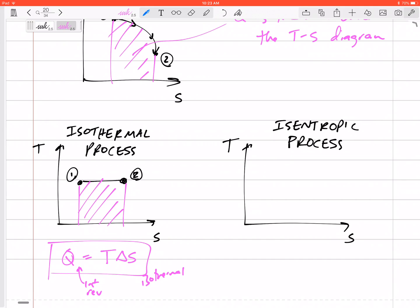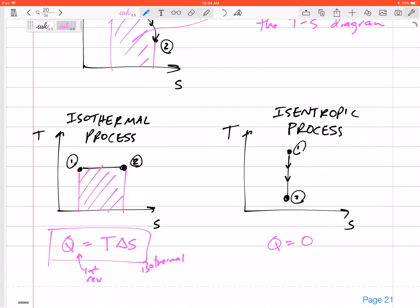What about an isentropic process? What does that look like on the TS diagram? Well, if it's isentropic, maybe it starts here and it goes down to there or up to there. But entropy stays the same. What is the area under the curve for that? Nothing. So Q is zero.